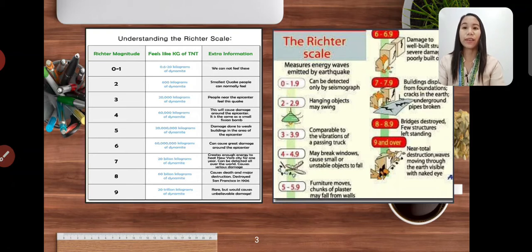0 to 1.9 can be detected only by the seismograph. 2 to 2.9 hanging objects may swing. 3 to 3.9 comparable to the vibrations of a passing truck. 4 to 4.9 may break windows, cause small or unstable objects. 5 to 5.9 furniture, roofs, chunks of plaster may fall from walls.